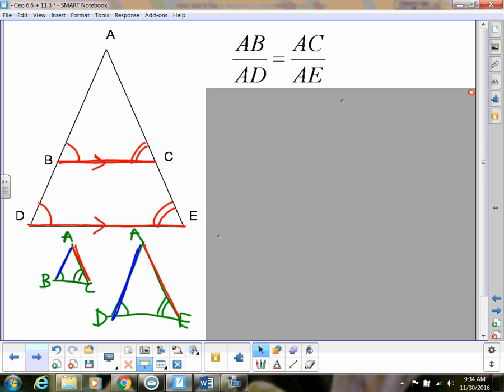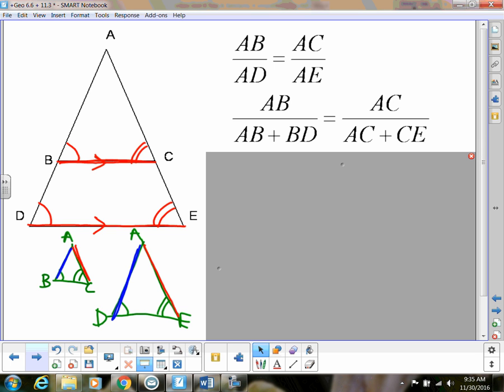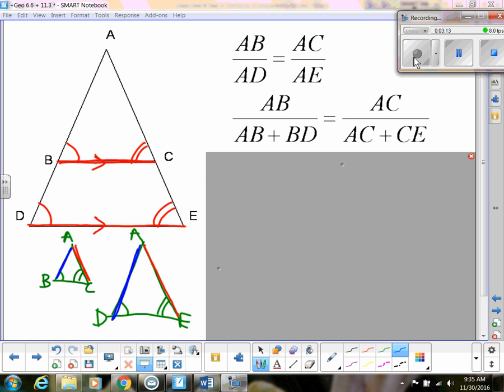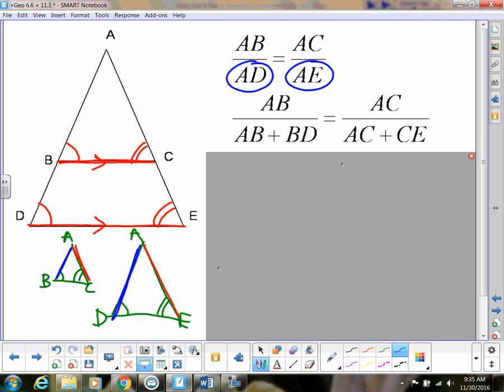So we're going to do a little algebraic manipulation here. Again, this is just to show you why this is true. You don't have to know how to do this or anything like that. I'm just showing you why. So what I'm going to do is notice that I have my bottom segments, AD. So I'm splitting AD up using the segment addition postulate into AB plus BD. So that's what that is. So AD is the same thing as AB plus BD. And then AE is the same thing as AC plus CE. Okay, so that's just using the segment addition postulate.